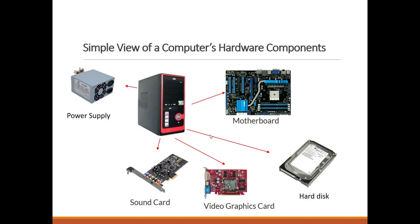We also have the video graphics card. When you see a picture, text, or anything on your screen or monitor, the video graphics card is responsible for converting data to a visible and understandable picture on the screen. The next component is the hard disk, sometimes called storage. This is the place where you store all your files, data, movies, pictures, and so on.